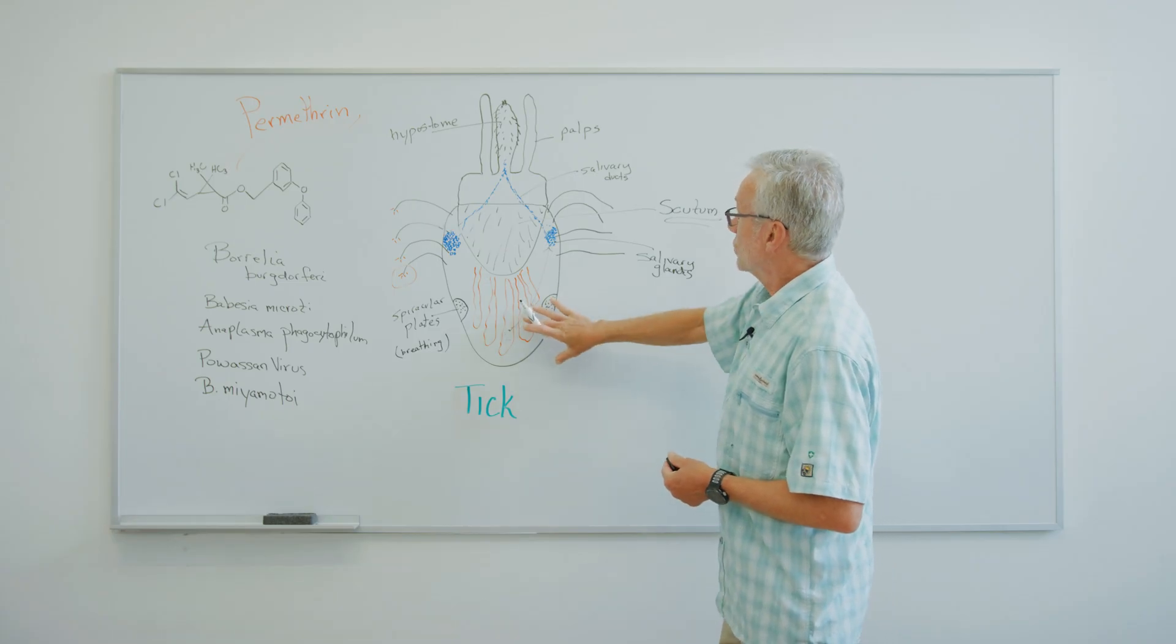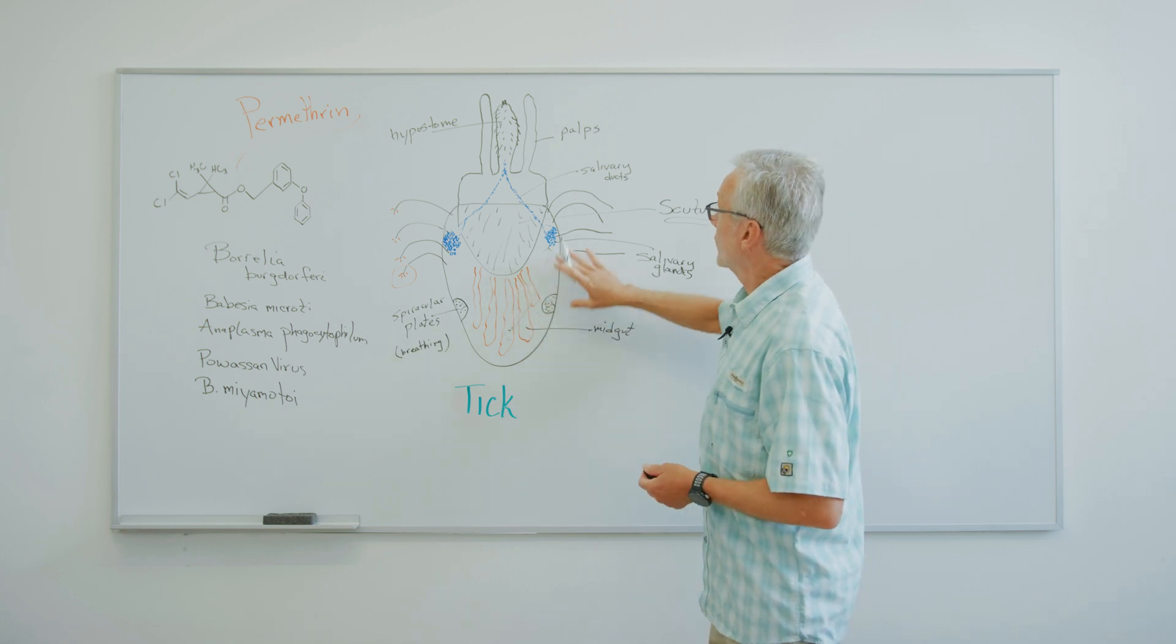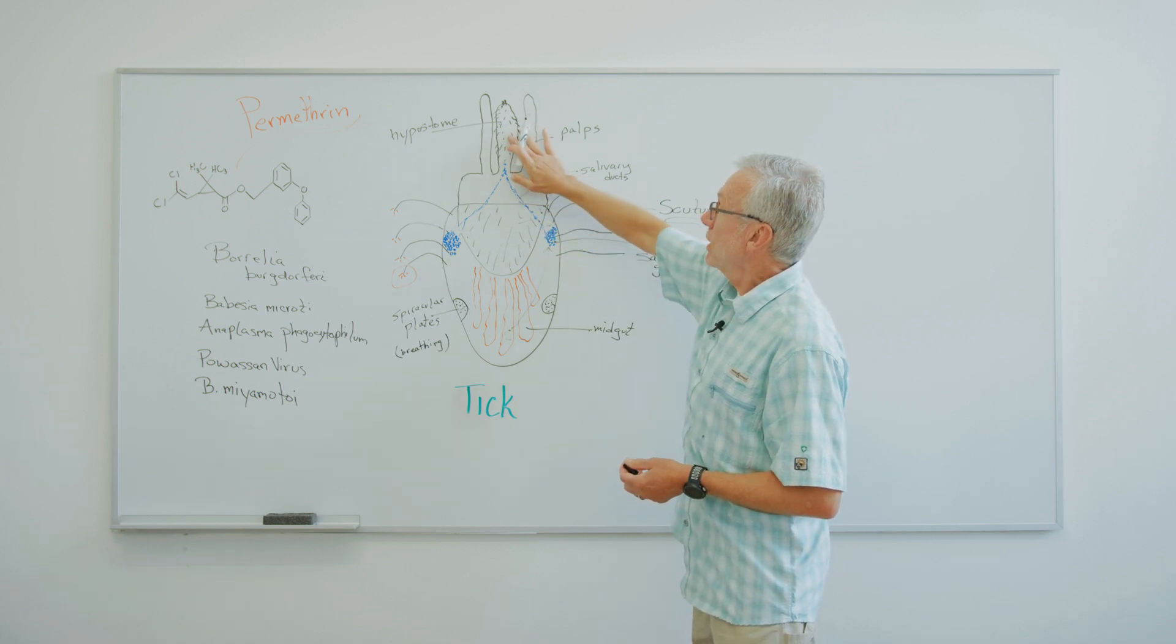So we have the midgut, where the blood goes, and also the germs. We have the salivary glands, where the germs go, and then they get put back into you through this hypostome.